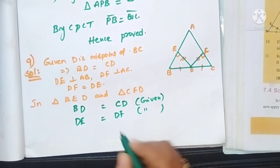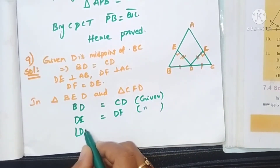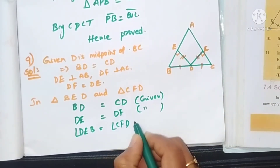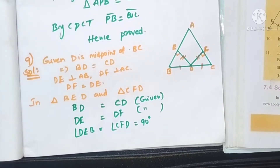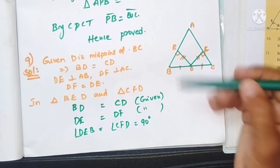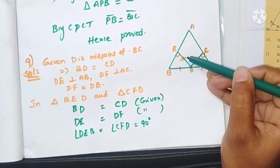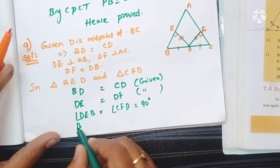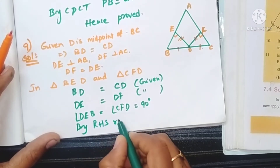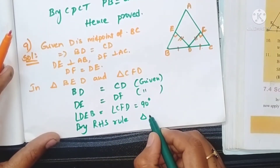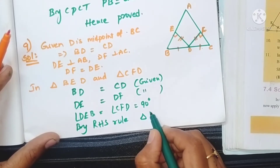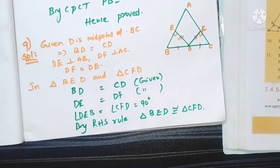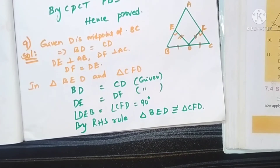Angle DEB equals angle DFC, both equal to 90 degrees. By RHS congruence — in a right-angled triangle, if the hypotenuse and one side equal the corresponding hypotenuse and side — by RHS rule, triangle BED is congruent to triangle CFD.